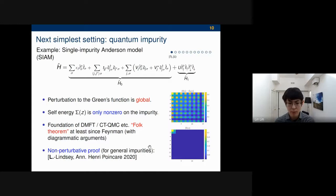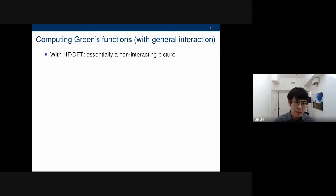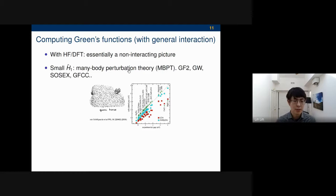What we are interested in, in general, of course, are Green's functions with a more general forming interaction, not just impurities. Most of the practical computations in this field are based on Hartree-Fock or DFT. This is essentially a non-interacting picture. If the interaction term is small, usually what you do is some sort of many-body perturbation theory, GF2, GW, second-order expansion, and so on. With this, you can already gain a lot. This is a pretty famous picture that for a bunch of materials, if you do the DFT-based calculation, the LDA is used as an illustrative example. The band gap compared to the experimental band gap would be significantly and systematically underestimated.